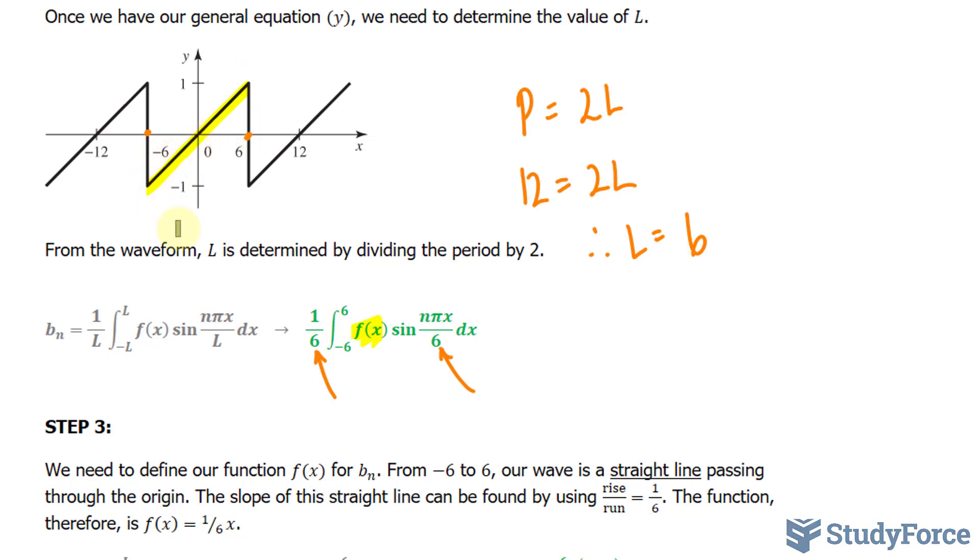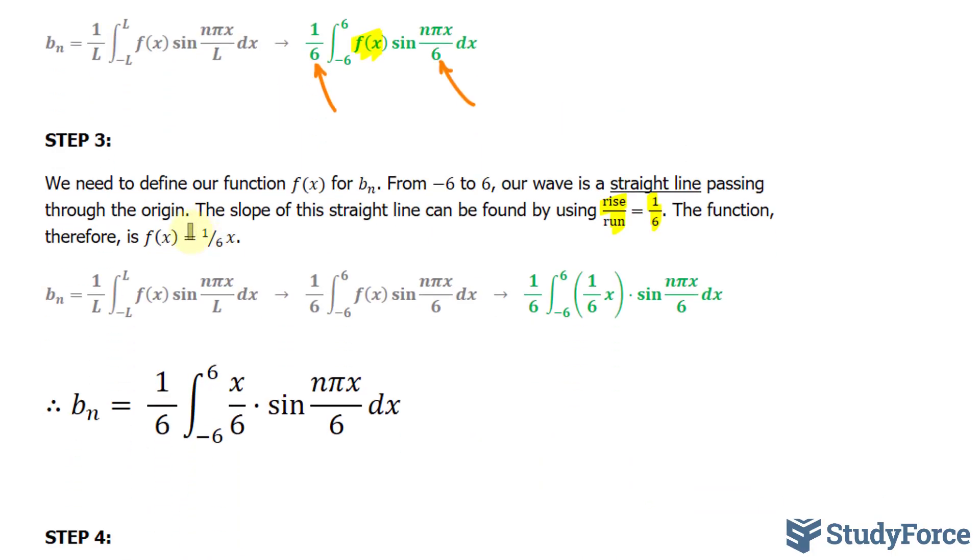And our slope, using rise over run, this rises from negative 1 all the way to positive 1. That's 2 units. And it runs 12. 2 over 12 is 1 over 6. And so f of x for b sub n, this part which was missing, is now 1 over 6x. So we found b sub n and we're going to use this to find the coefficients for each of the terms.